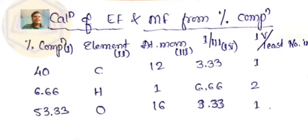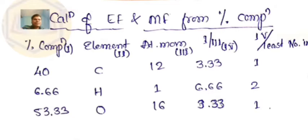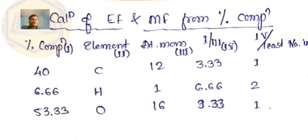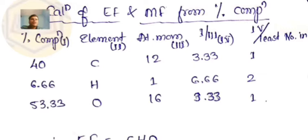From this percentage composition, we need to work out the empirical formula and molecular formula. The first step is to divide each element's percentage by its atomic mass. Carbon: 40 ÷ 12 = 3.33. Hydrogen: 6.66 ÷ 1 = 6.66. Oxygen: 53.33 ÷ 16 = 3.33. These numbers need to be converted to the simplest whole number ratio.